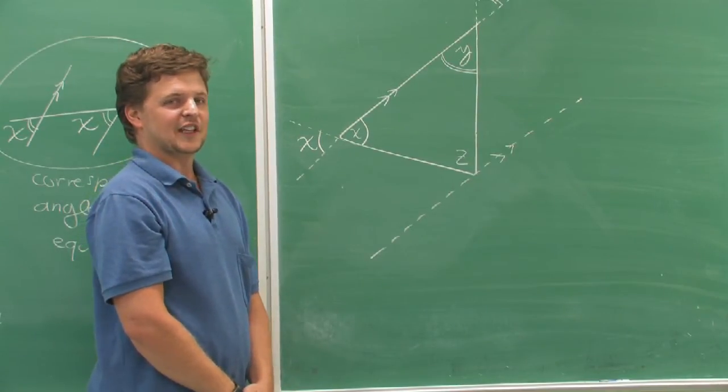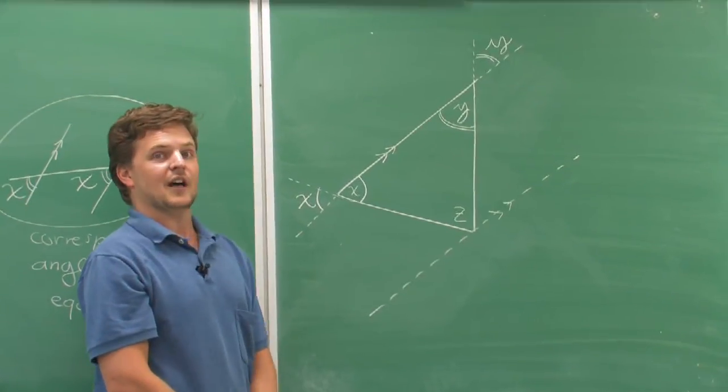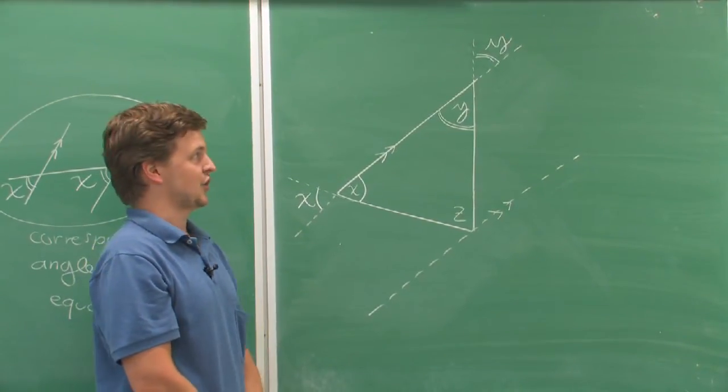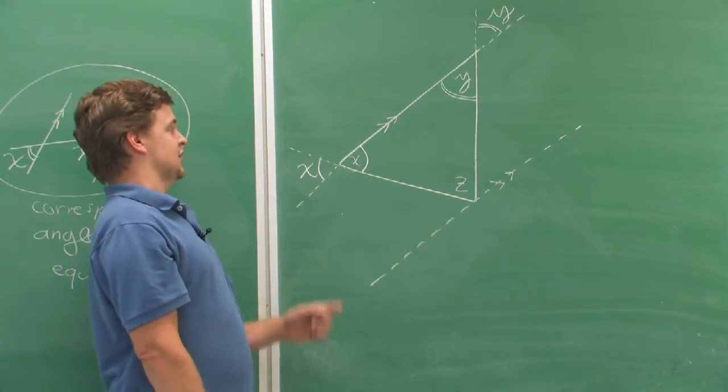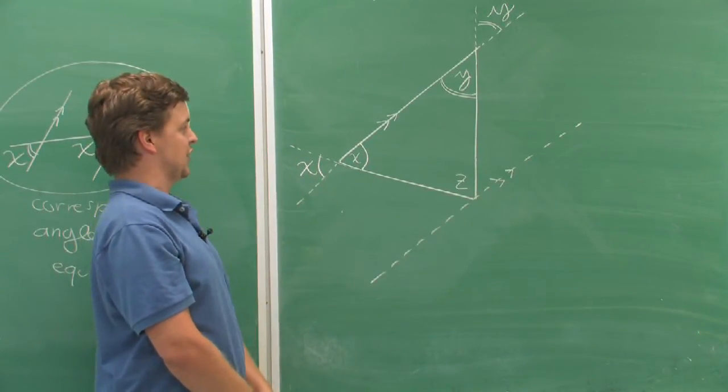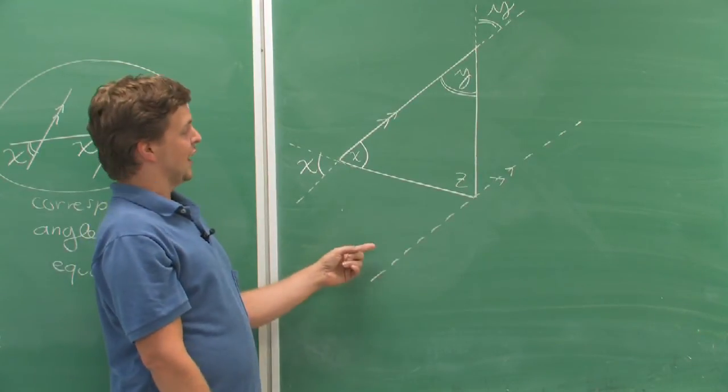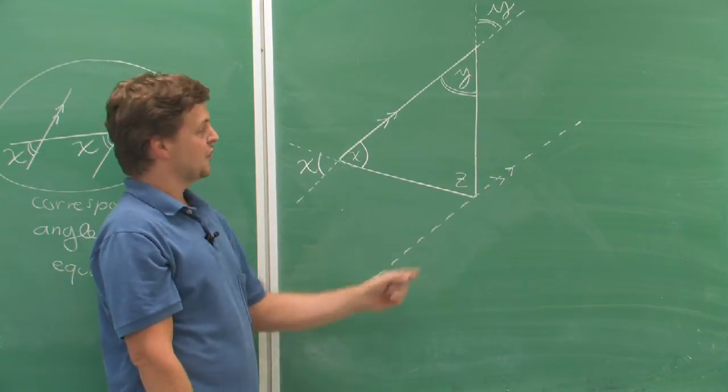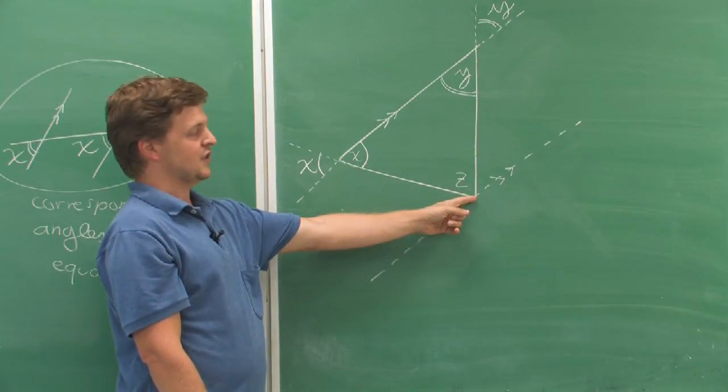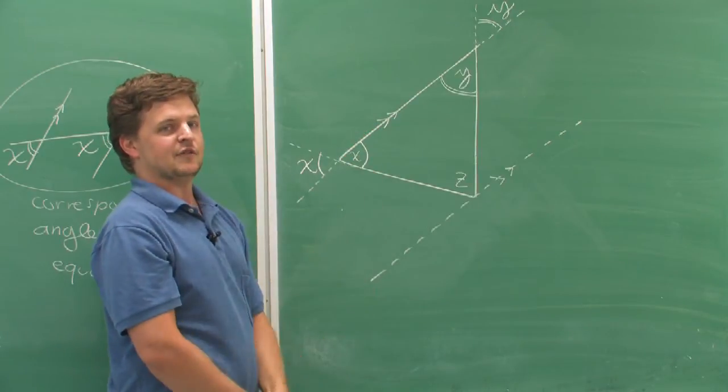Now, I'm going to use my second fact about corresponding angles. To do that, I'm going to have to add a line to my picture. Notice that I've already extended these lines a little bit to create the angles, the new angles opposite to the original ones. Now, I need an entirely new line. It's going to go through the point at which z is the angle and it's going to be parallel to the opposite side from z.